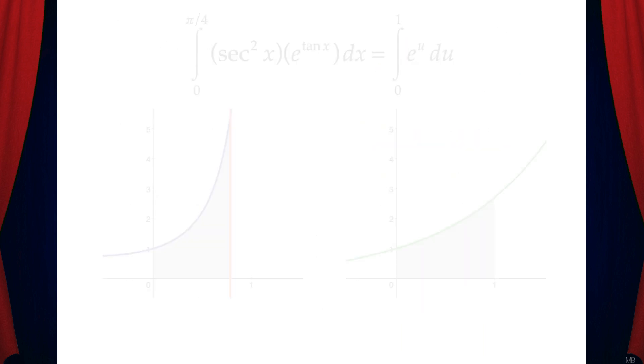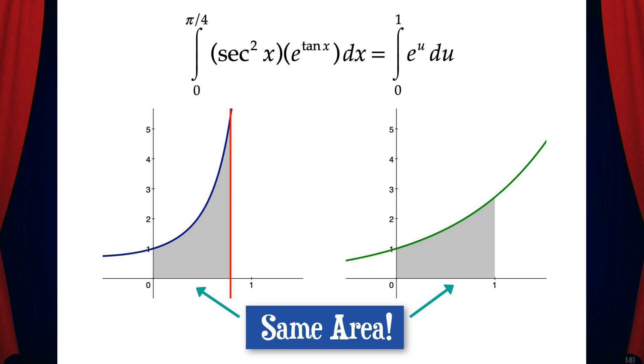Let's take a look at this graphically. The area under the curve of the original function, secant squared x times e to the tan x, is equivalent to the area under the curve of e to the u. What we've done algebraically is taken the original integral and converted it to another integral that's easier to solve by hand.